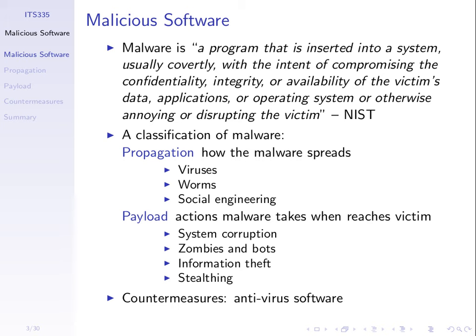We'll see examples of each through this topic. How do we stop malicious software — anti-malware, or more specifically anti-virus software? We'll finish with a couple of techniques used by anti-virus software. Who uses anti-virus software on their computer? Many people would. What's wrong with it? Sometimes it may slow down your computer because it needs to do checking — checking all files on your disk, maybe all network activity — that takes CPU time and resources.